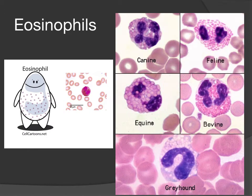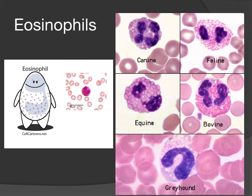Our next granulocyte is the eosinophil — personally the most beautiful of all leukocytes, especially the equine and feline eosinophils. The eosinophil will have eosinophilic granules that stain very bright pink or orange in most Diff-Quick or Wright-Giemsa stains, making them very identifiable. The nucleus will be multi-lobed, usually not as many lobes as the neutrophil — oftentimes just two — but those characteristic bright pink granules are what you're going to be seeing.